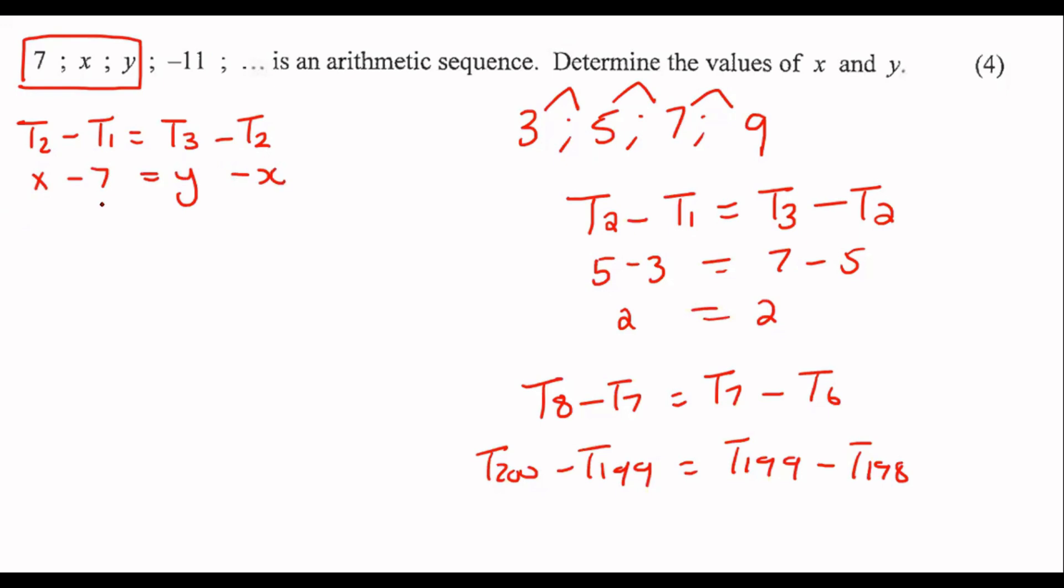Then you could simplify that a little bit if you wanted to. It would eventually say that 2x minus 7 is equal to y. Now don't panic. There's nothing you can do there. So what we do is we go on to the next one.